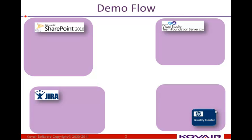Let's discuss the demonstration flow. In this case we have four different tools. Microsoft SharePoint is used by the whole enterprise to submit requirement requests, bugs, defects, as well as queries. The development team uses Visual Studio for coding and TFS for source code management, and they also use Jira for bug tracking. The testing team uses Quality Center for test case management and to generate defects on testing.